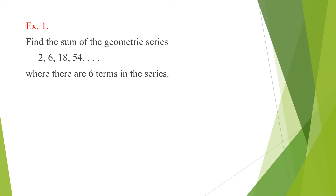For this series, we have our first term a equal to 2. Our common ratio: 6 divided by 2 is 3. If we check again, 18 divided by 6 is 3, and 54 divided by 18 is 3. So our common ratio r is equal to 3. And our n is equal to 6 since we have 6 terms in the series.